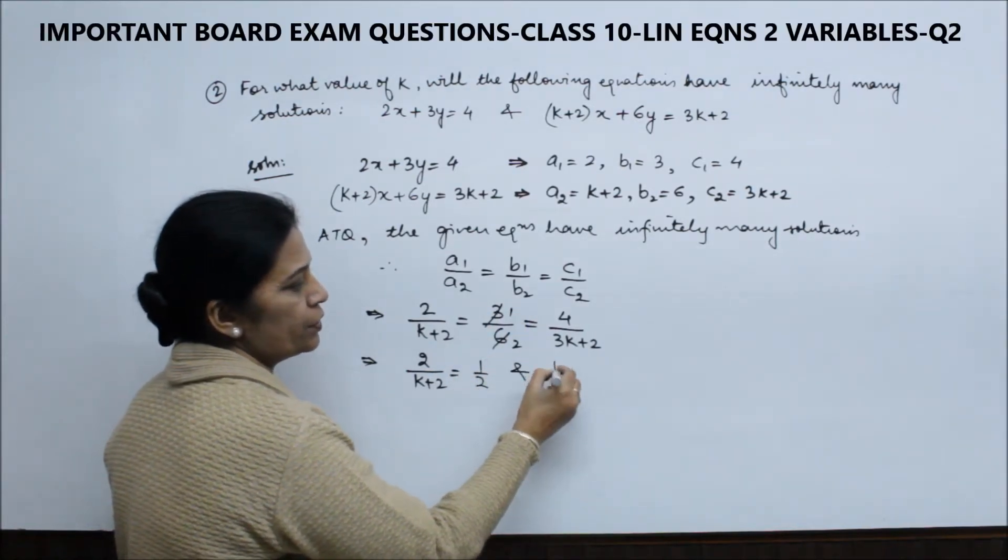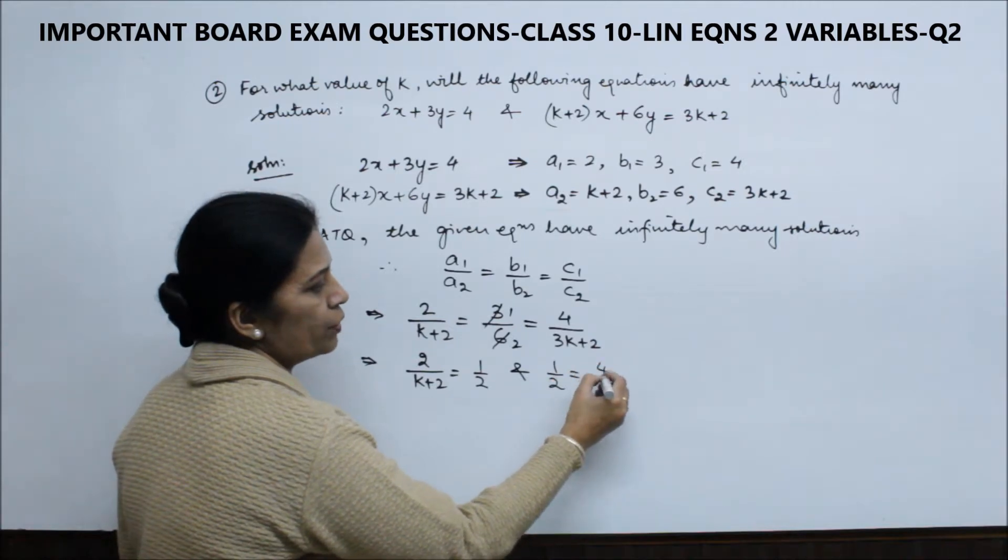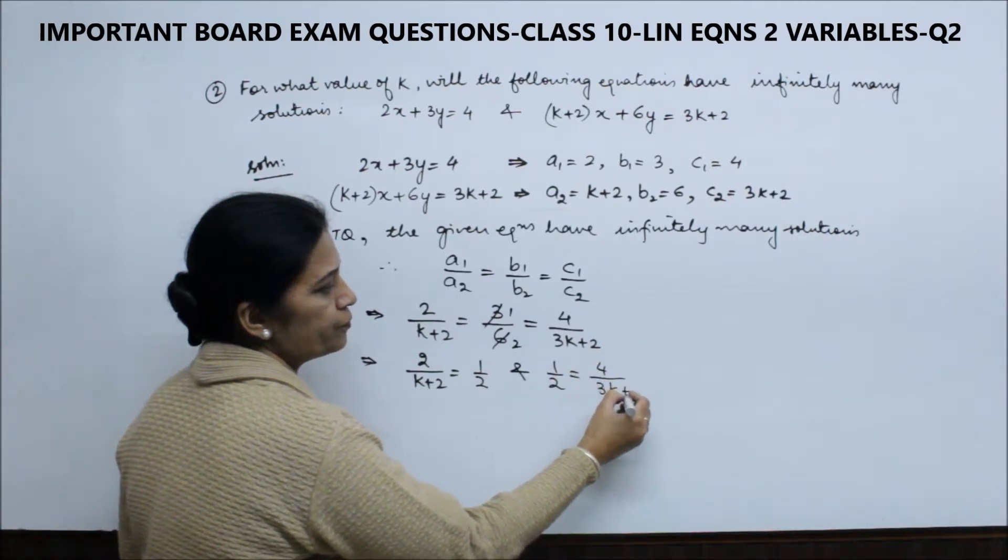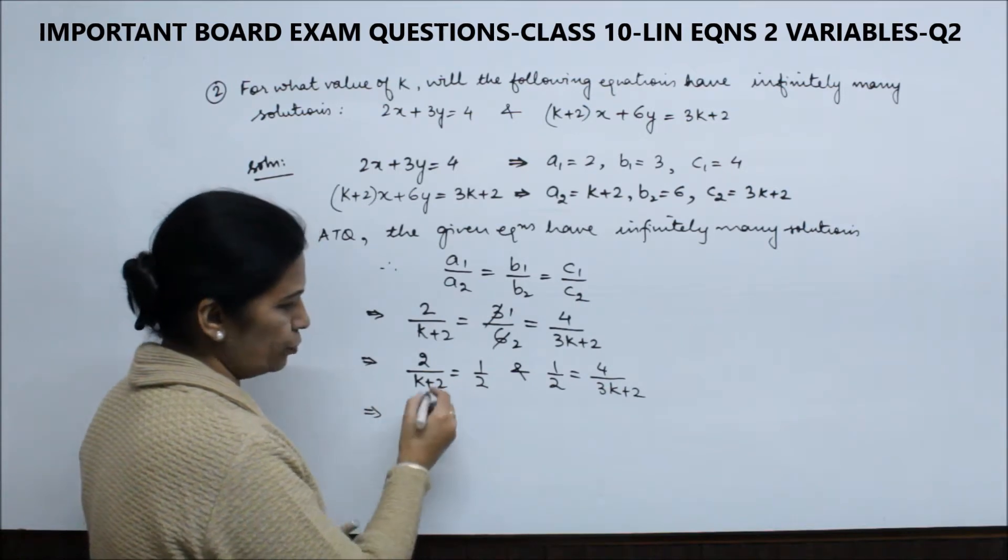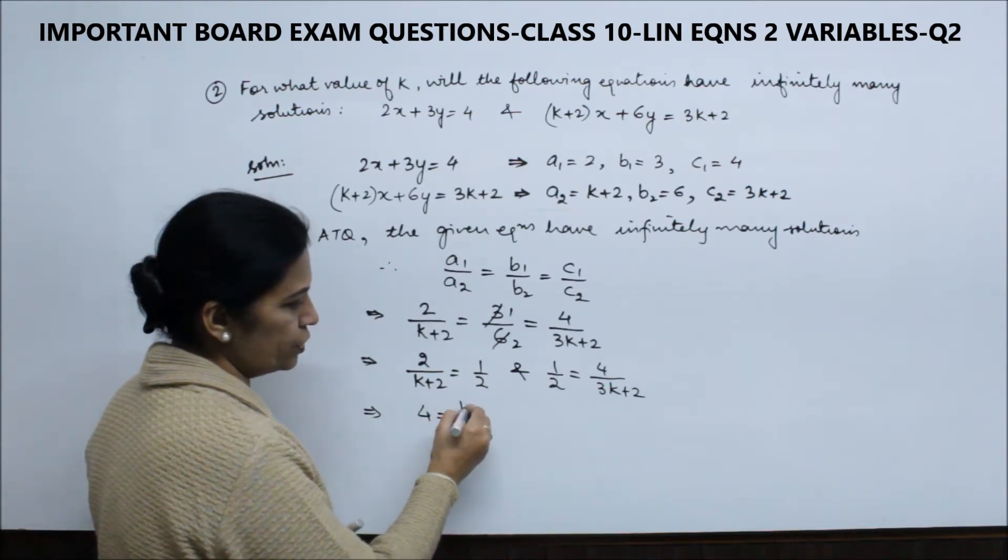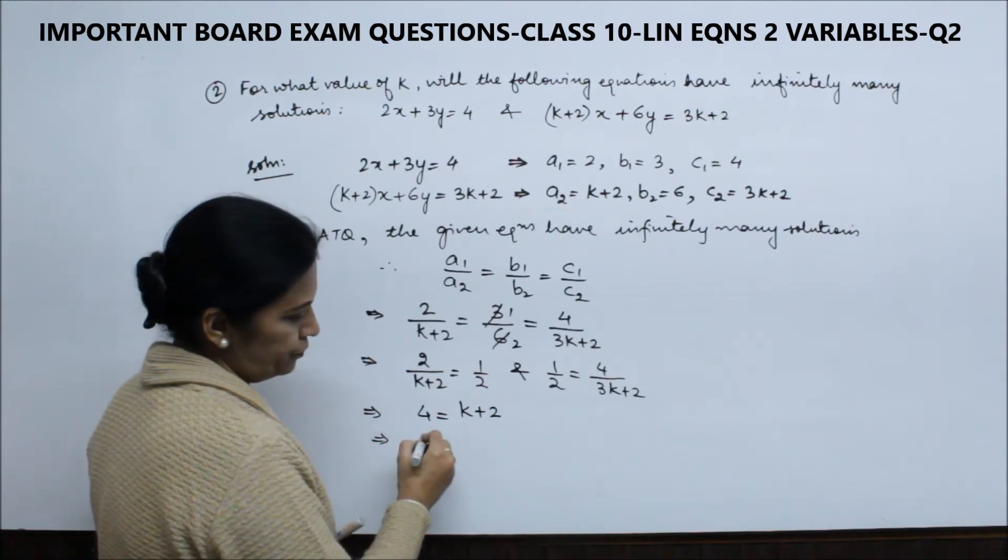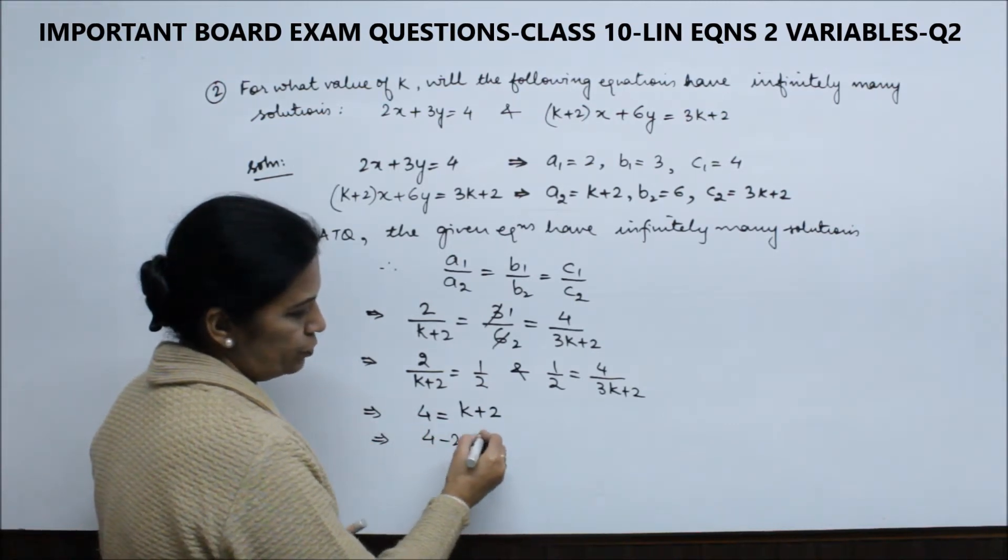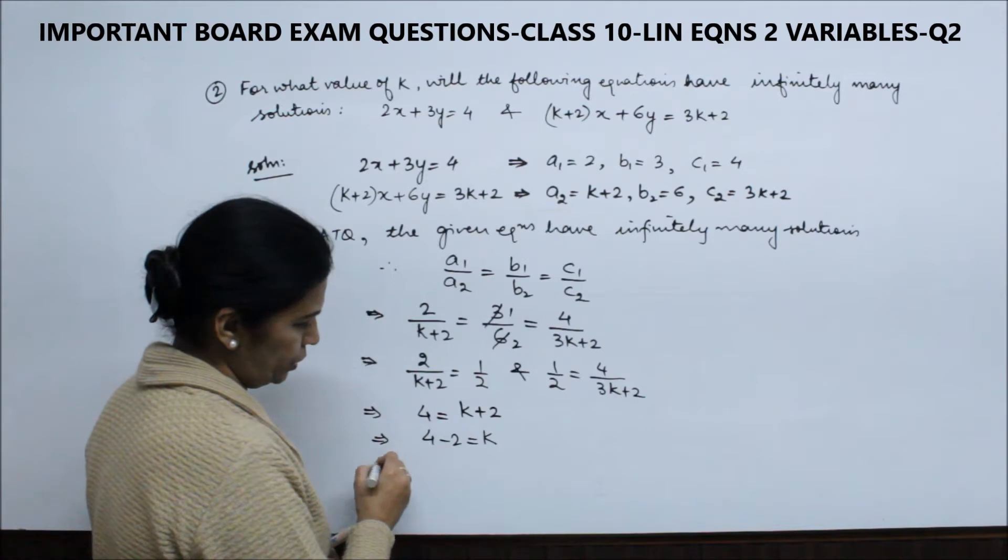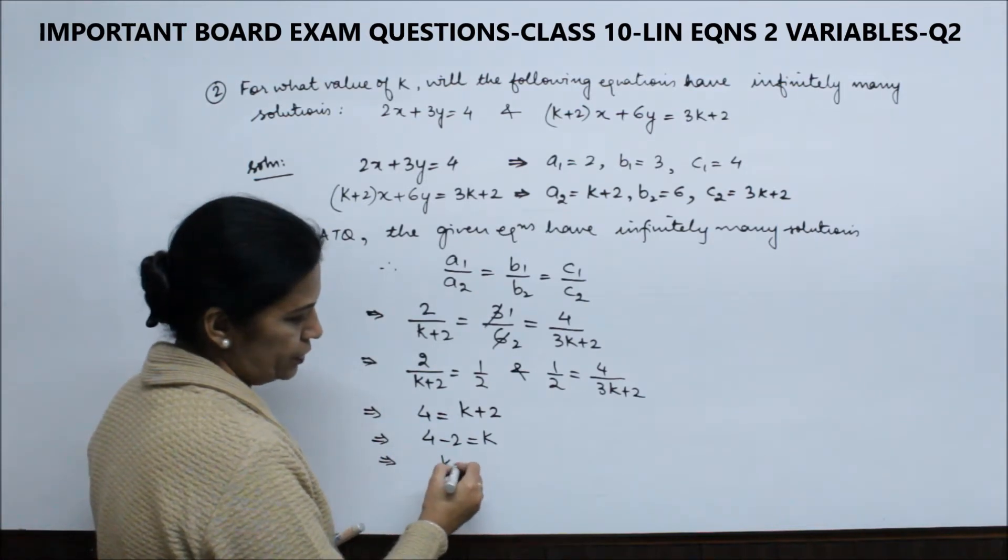...which simplifies to 1/2. Now, simplifying by cross multiplying: 2(2) = 1(k+2), so 4 = k + 2. Therefore, 4 - 2 = k, so k = 2.